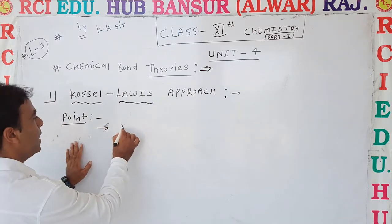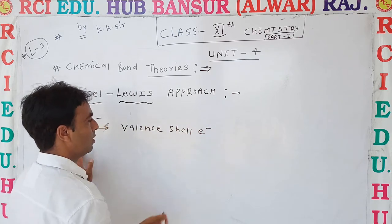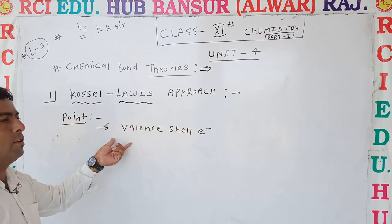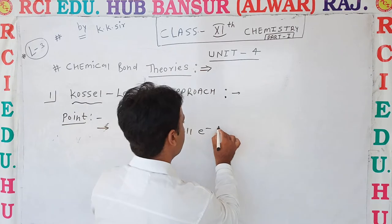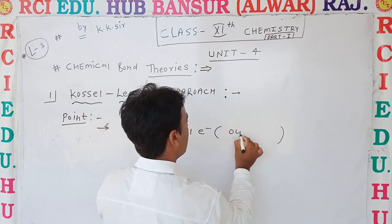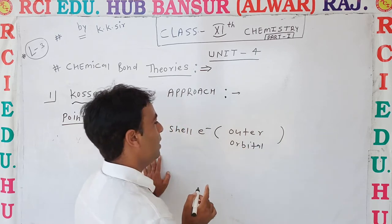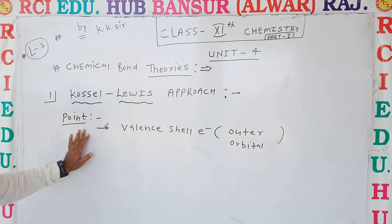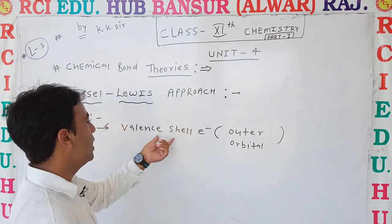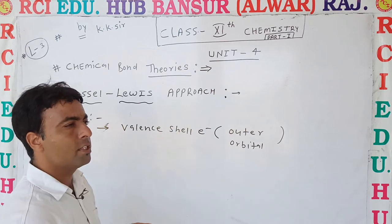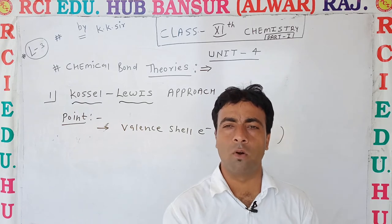This theory explains valence shell electrons. What are valence shell electrons? The electrons which are found in the outer orbital — we see how many electrons are present in the outer orbital. Those are called valence shell electrons, and they participate in and govern chemical bond formation.